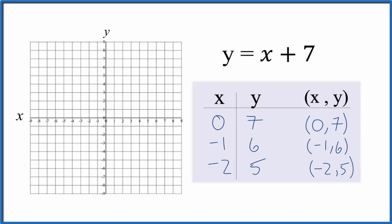Let's do the first point: 0 for x, 7 for y, so x is 0 and y is 7. Then we have -1 for x, 6 for y, so -1, go up to 6. And finally, -2 and we go up to 5.